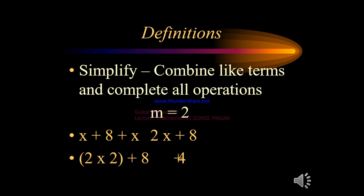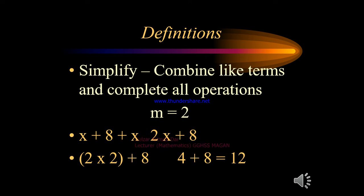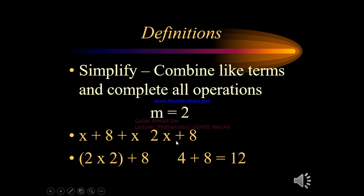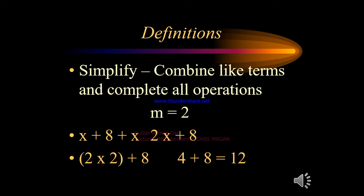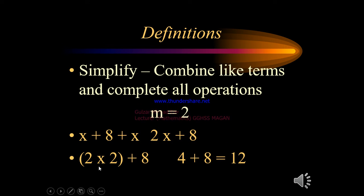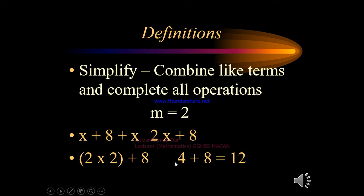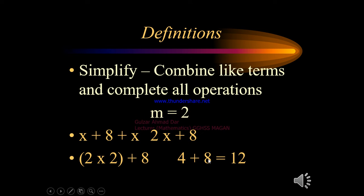Another example: 2 times 2 plus 8. Here the two 2s are like terms. We simplify the part within the expression first — 2 times 2 equals 4 — then 4 plus 8 gives a total sum of 12.